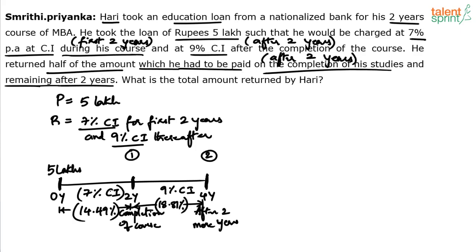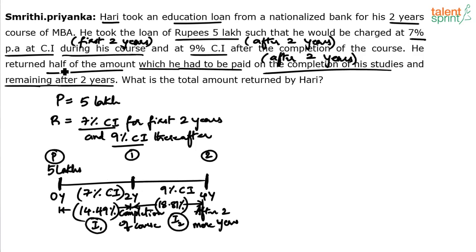He returned half of the amount at the end of two years. At the end of two years, a person is supposed to pay 5 lakhs plus 14.49% of 5 lakhs — that is, principal P plus interest I1. But he only paid half of it: (P + I1) / 2. The remaining (P + I1) / 2 was paid at the end of two more years, but on that remaining amount, 18.81% interest will furthermore be charged.